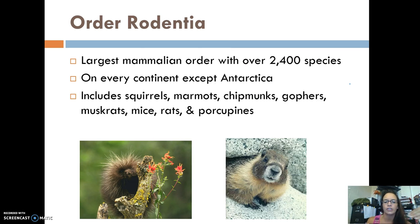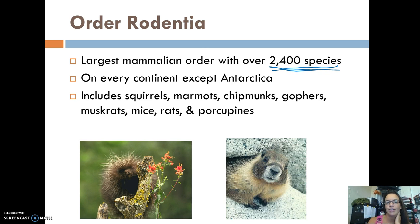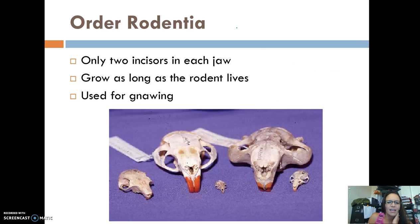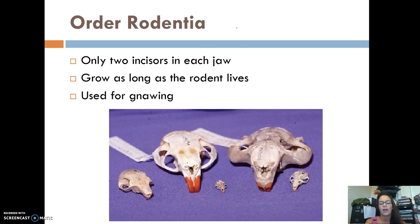Order Rodentia is the largest mammalian order with over 2,400 species, living on every continent except Antarctica. These are your rodents: squirrels, marmots, chipmunks, gophers, muskrats, mice, rats, and porcupines. Something unique about rodents is that they have two incisors in each jaw that keep growing as long as the rodent lives. They're used for gnawing, which is why rodents constantly chew on things — the teeth will actually grow through their lips if not gnawed down enough.